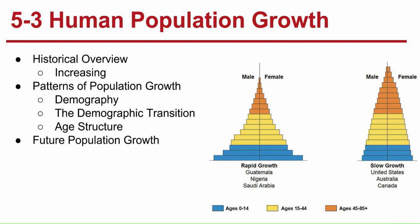The demographic transition is what I was just talking about — the increase from birth and death rates being equal to birth rates surpassing death rates. For the United States, this started in 1790 and went all the way to 1910. This transition is the reason the United States now has a very slow growth rate, and we can see in the graph close to equal amounts of people in each age group.